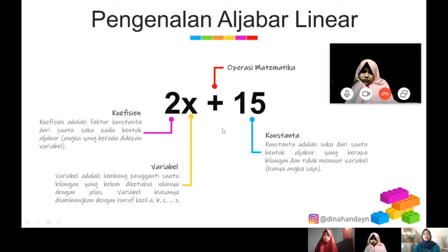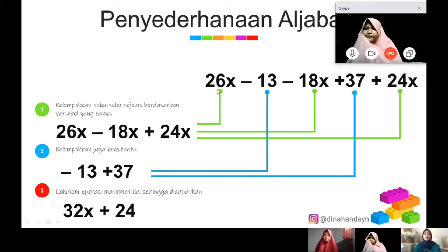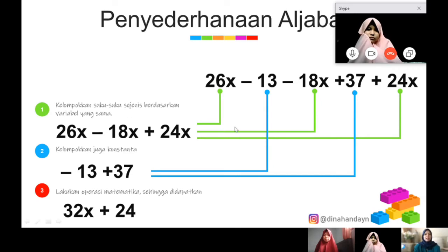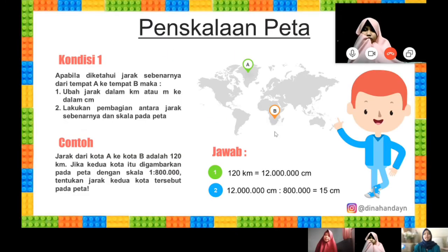Untuk pengenalan aljabar linier hanya itu. Kemudian ada bentuk penyederhanaan dalam aljabar. Misalnya diberi persamaan 26X dikurang 13 dikurang 18X tambah 37 dan tambah 24X. Cara untuk menyederhanakan aljabar yaitu dengan mengelompokkan suku-suku sejenis berdasarkan variabel yang sama. Di sini kita bisa mulai mengelompokkan 26X, min 18X, dan 24X.